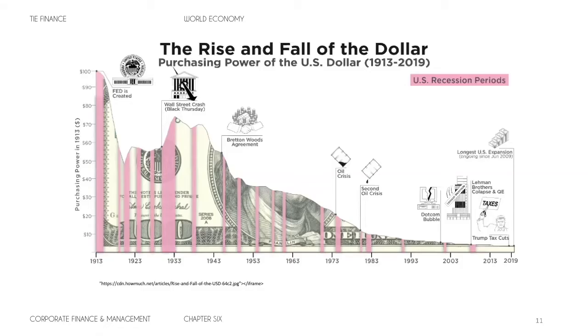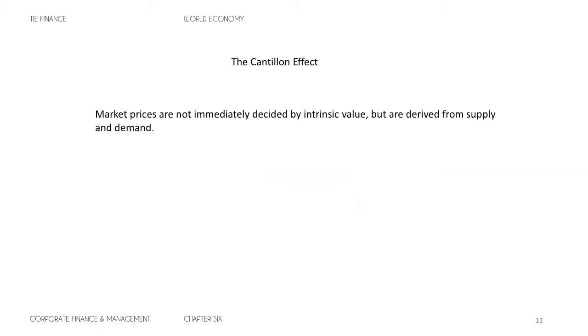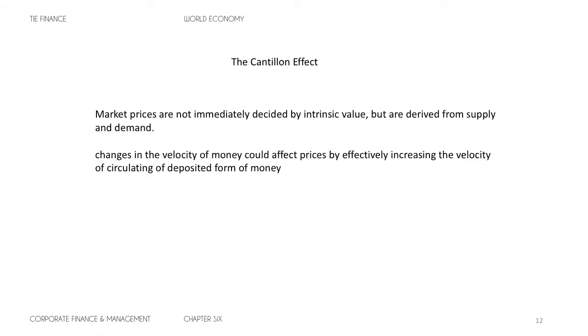There's a question of when the financial system will fail people and there will be an uncomfortable restructuring of debt among nation states. I want to talk about the Cantillon effect. Richard Cantillon, an Irish-French economist recognized in the 18th century, held that market prices are not immediately decided by intrinsic value but are derived from supply and demand. If you want to sell something, prices are not immediately given to that product or service.